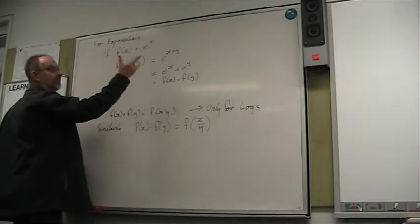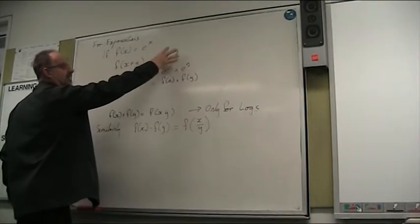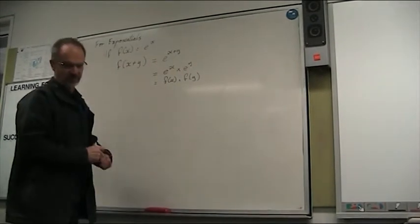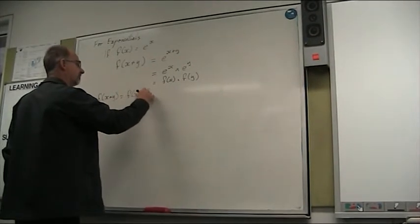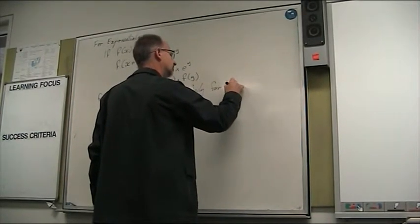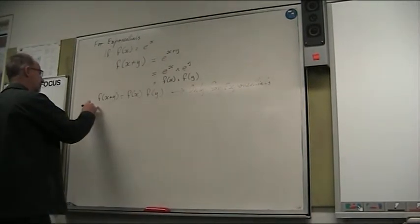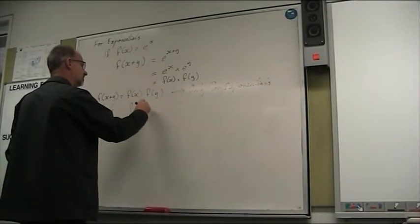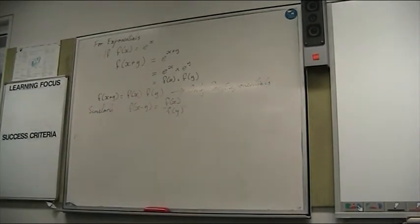Again, that's a different pattern. So normally, that wouldn't be the case. These two things would not be equal to each other. But because of exponentials and the index laws, the pattern's slightly different. So f of x plus y is equal to f of x times f of y. And again, that's only for exponentials. And similarly, if we have x minus y, f of x over f of y.